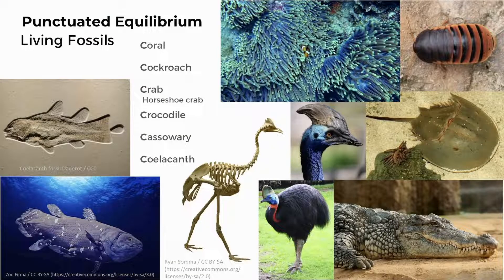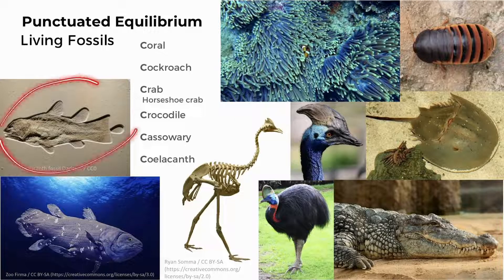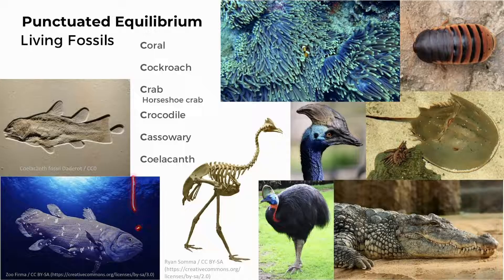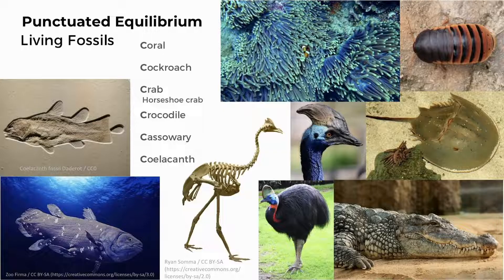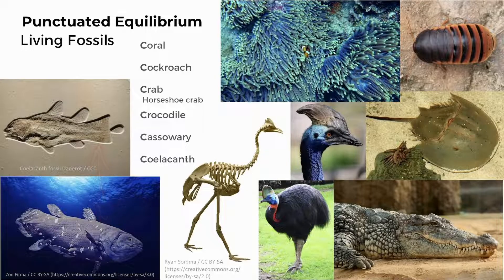Living fossils are species found in the fossil record and thought extinct for hundreds of millions of years, then discovered alive in modern times, relatively unchanged. Living fossils provide evidence to support Gould and Eldridge's theory of punctuated equilibrium, as there is little difference between the extinct fossil form and the living form.